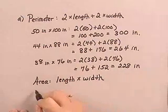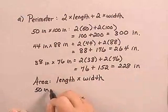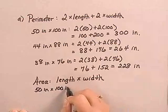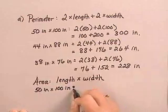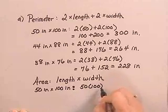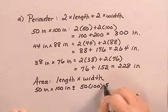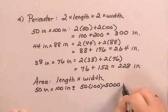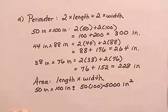So for the first table, the 50 inch by 100 inch table, we have 50 inches times 100 inches, or 5,000 square inches, since we have areas in square units.